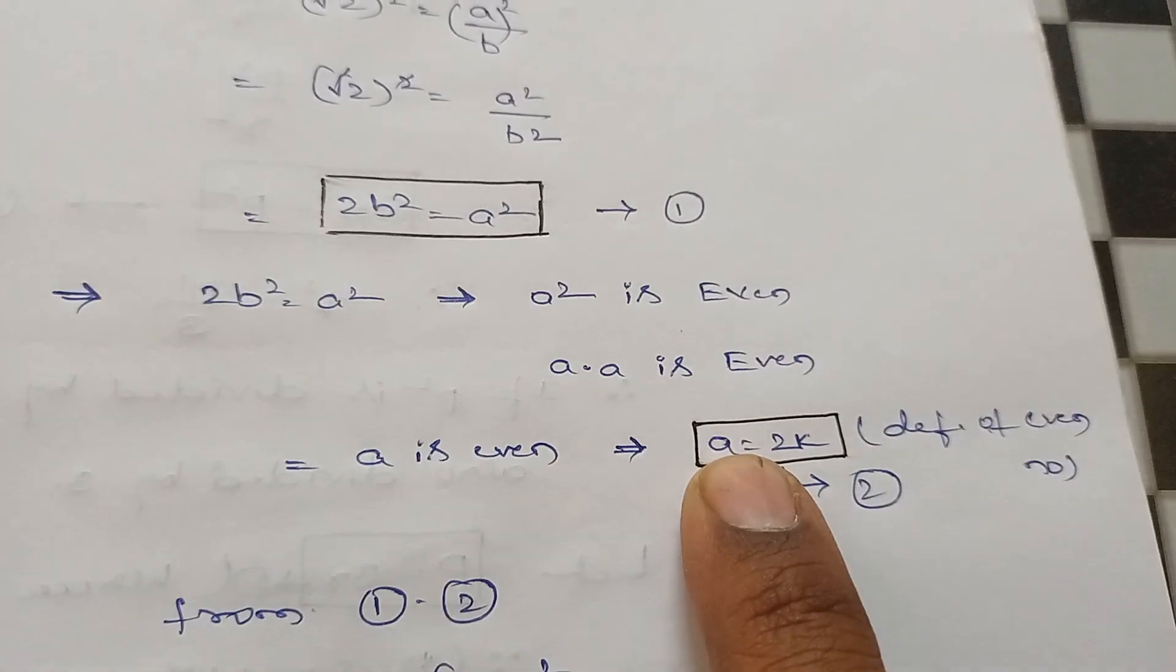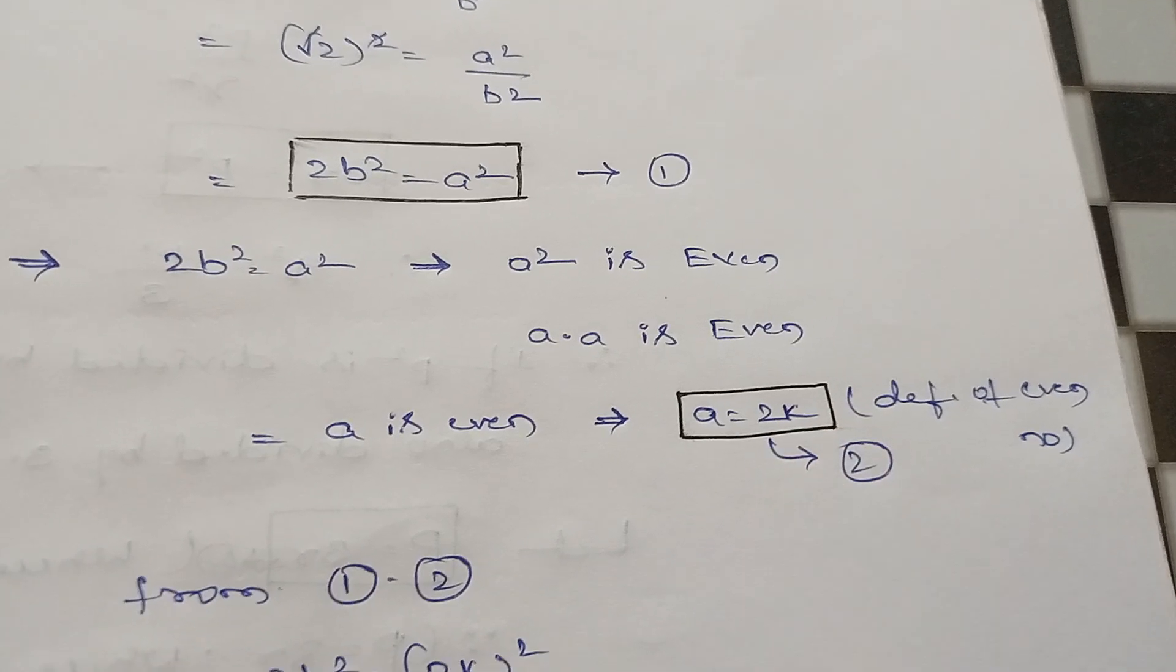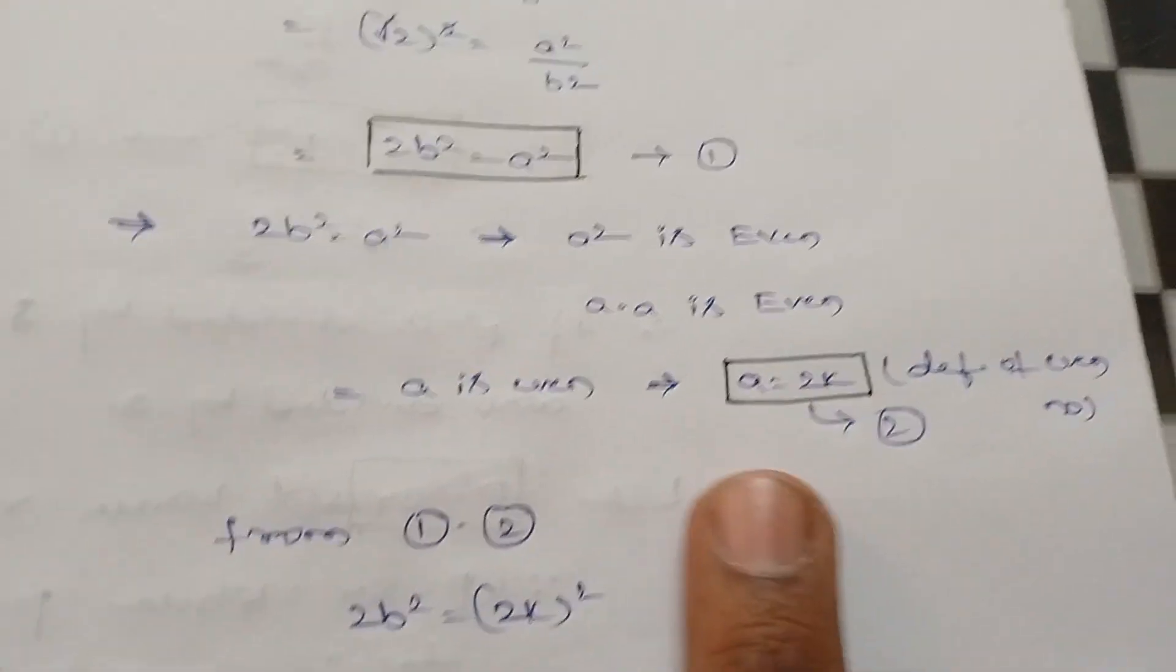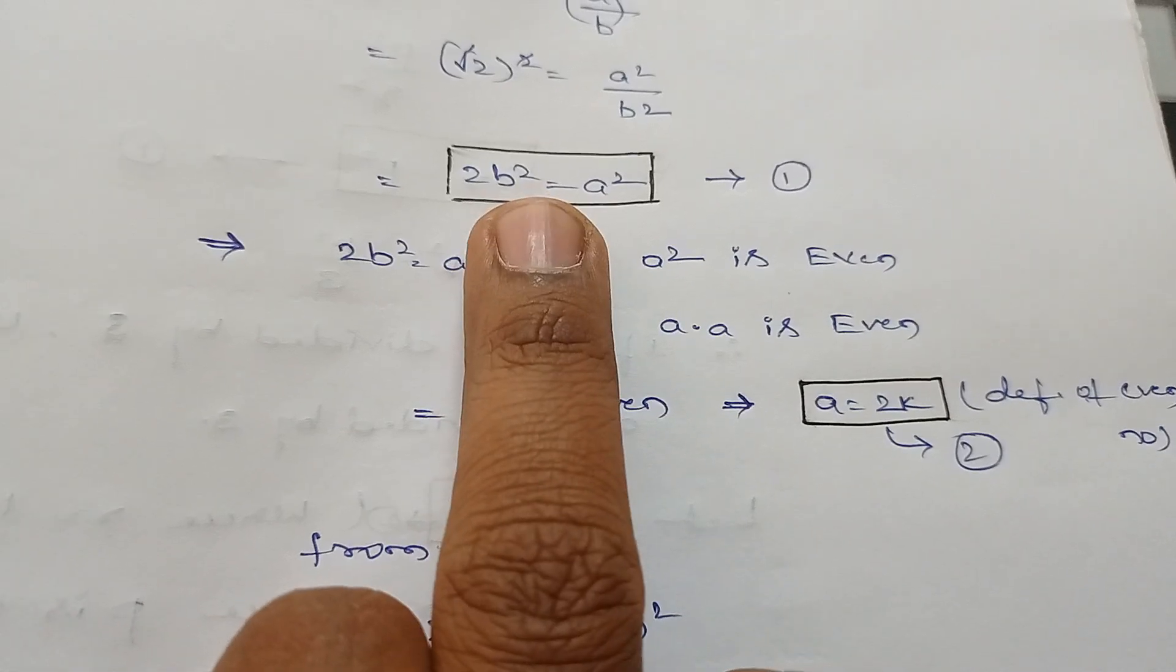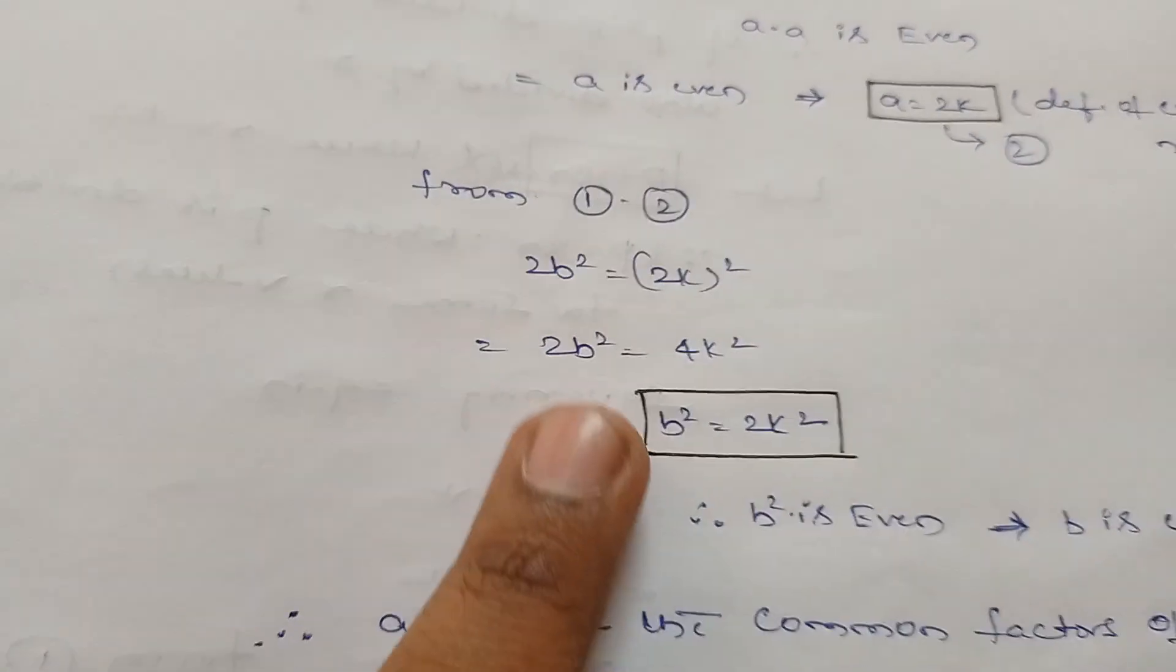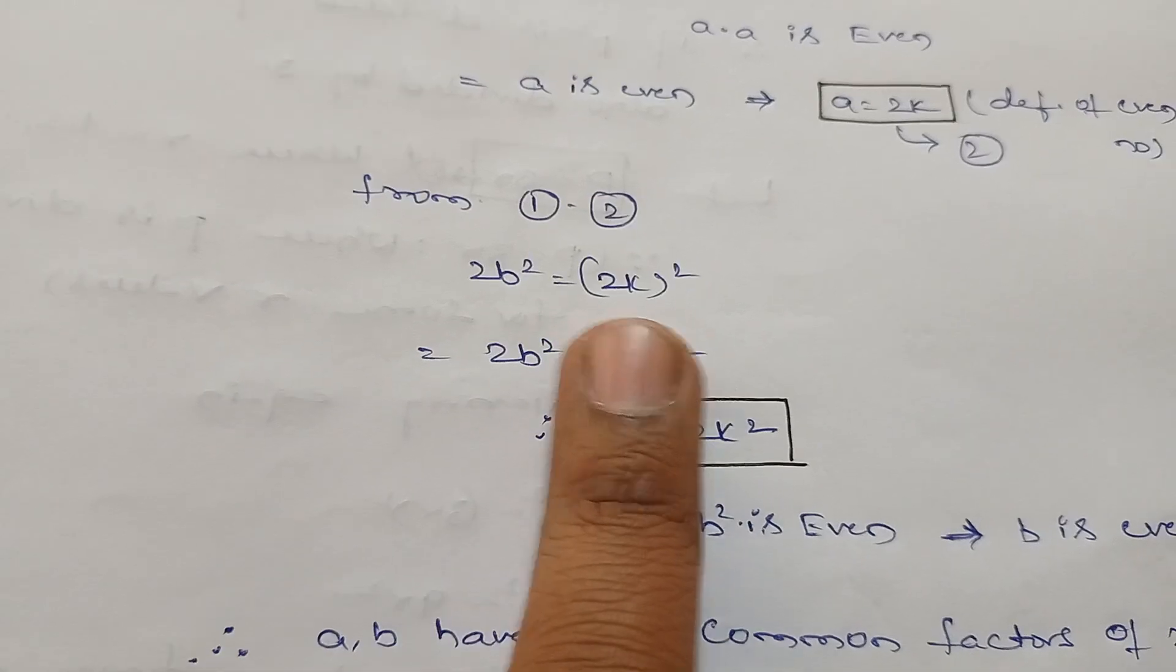So I have mentioned here a = 2k as the definition of an even number; keep it as equation 2. Substitute this a = 2k in equation 1 and simplify.